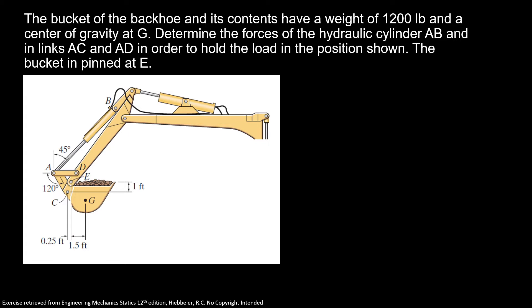The bucket of the backhoe and its contents have a weight of 1,200 pounds and a center of gravity at G. Determine the forces at the hydraulic cylinder AB and the links AC and AD in order to hold the load in the position shown. The bucket is pinned at E.